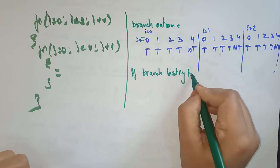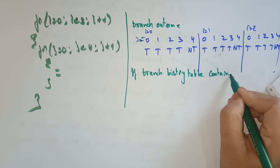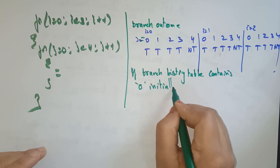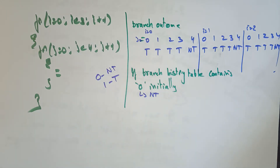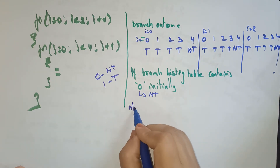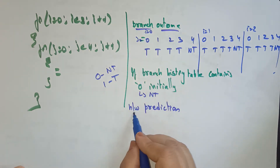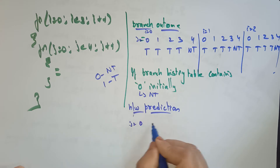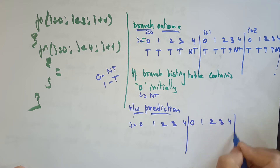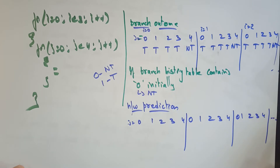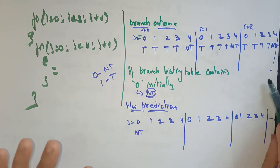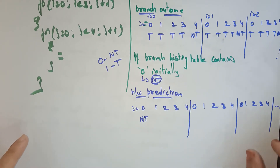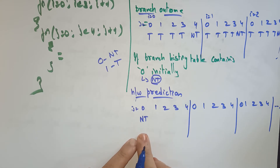Now let's see the hardware prediction. The branch history table initially contains 0, which means non-taken. So 0 means non-taken and 1 means taken. The initial hardware prediction starts with non-taken. Now let's see the hardware prediction sequence when j goes 0,1,2,3,4 across iterations of i.